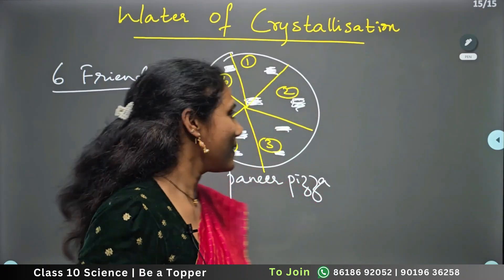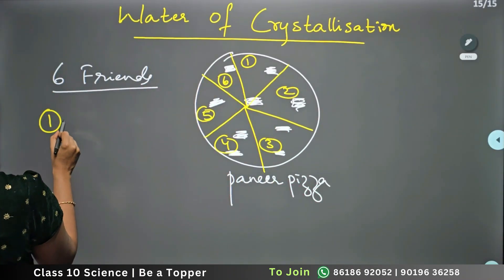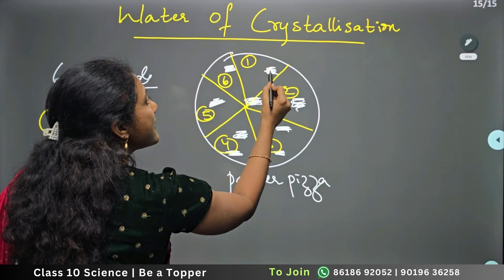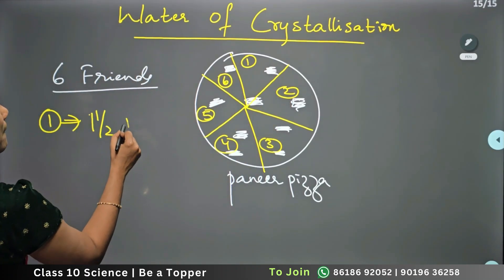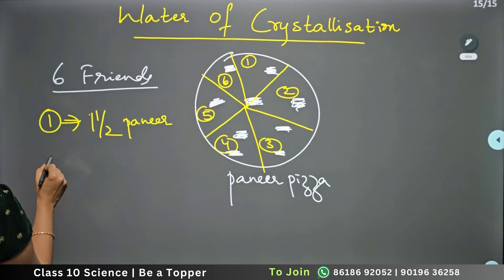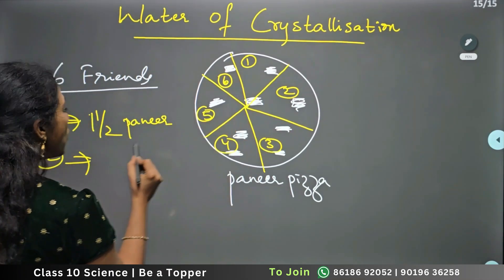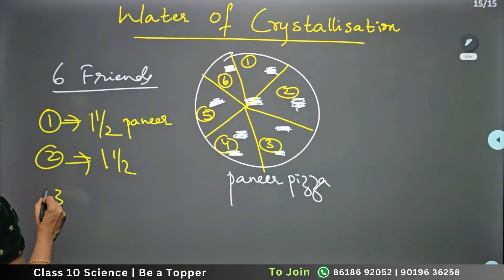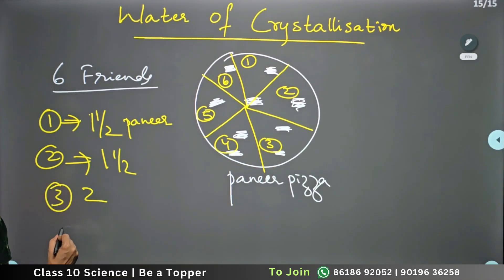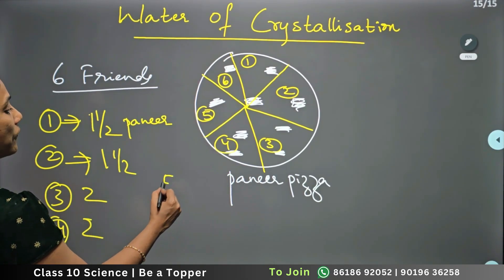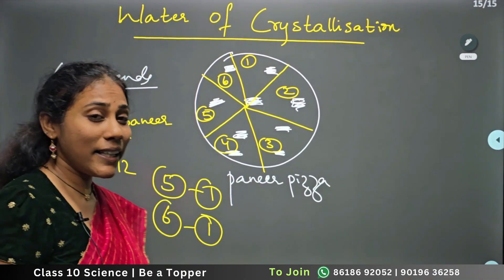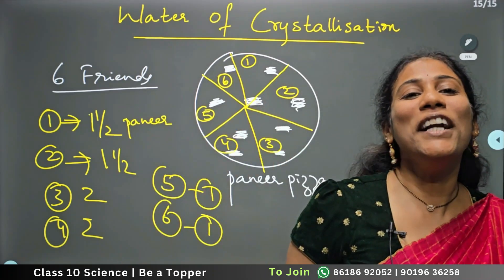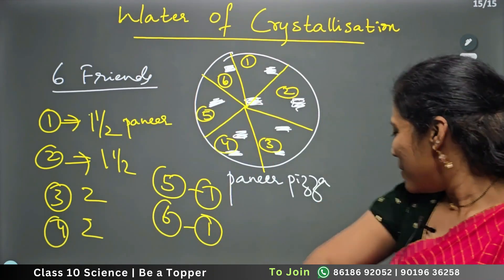Now each friend gets how many paneer pieces? The first friend is getting one and a half paneer pieces. The second friend also gets about one and a half. The third friend gets two paneer pieces, the fourth also gets two, the fifth gets one, and the sixth gets one. Why did I tell you this? This is what we mean by water of crystallization.